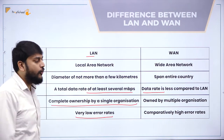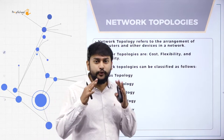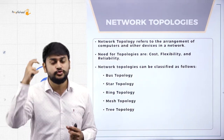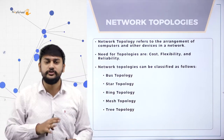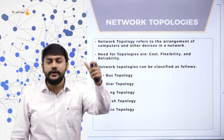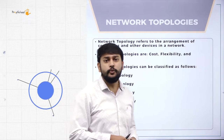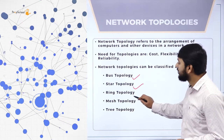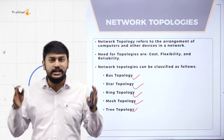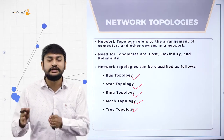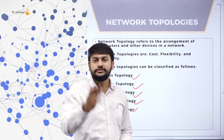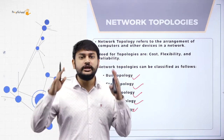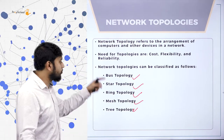Now the main topic starts — topologies. Topology is about the different arrangements of systems. If we arrange systems in different ways and give names to those arrangements, that is what we study under topologies. We have bus, star, ring, mesh, and tree topology. Each has its own uniqueness, features, advantages, and disadvantages.